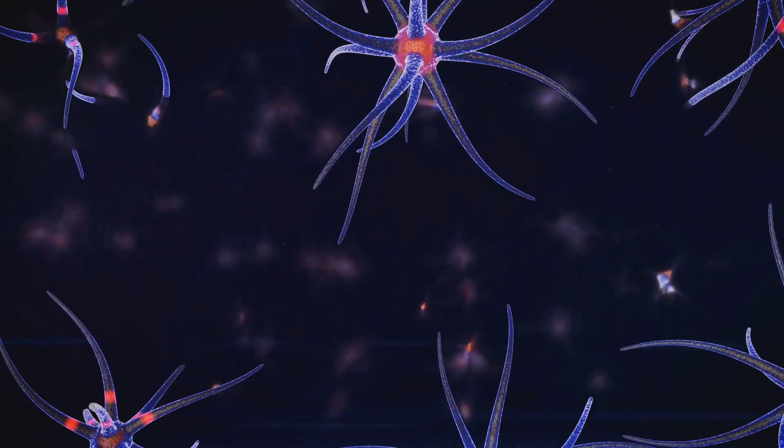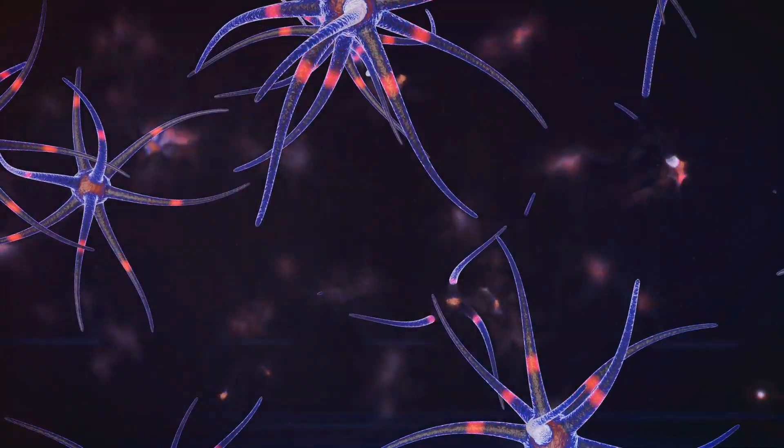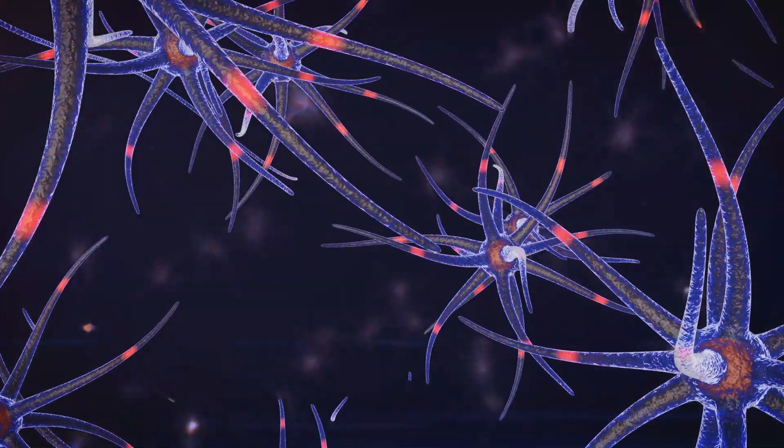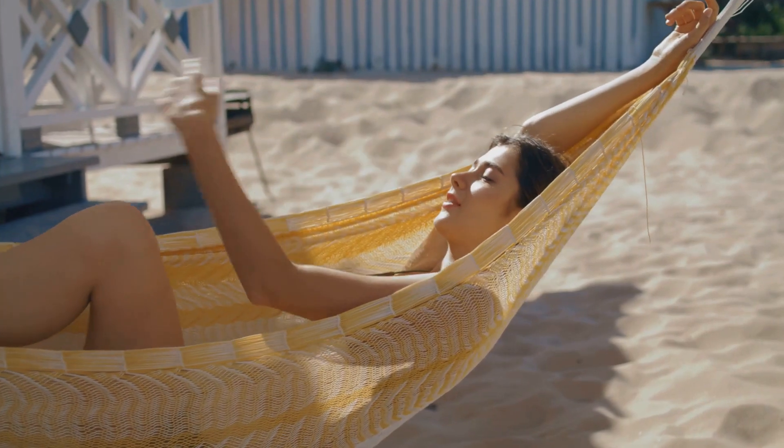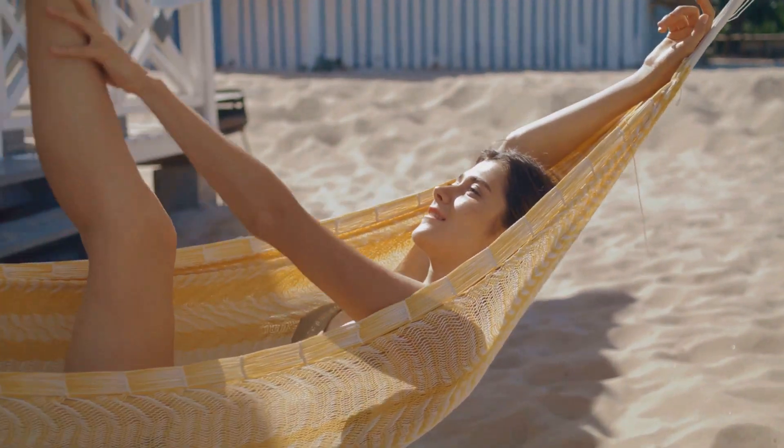With approximately 86 billion neurons, your brain has more elements than the number of stars in our Milky Way galaxy. It's an organ that's constantly working, even when you're at rest. So the next time you forget where you put your keys, remember your brain is busy being a supercomputer.